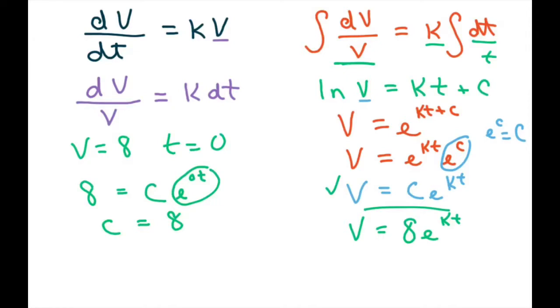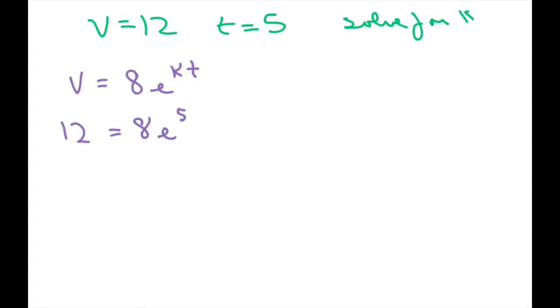Now we're going to use the condition that v equals 12 at time equals 5 and solve for k. So basically, we had v equals 8 e to kt. So now we're going from 12 equals 8 times e to the 5k. 5k because t was 5.